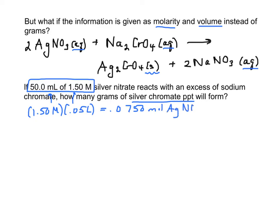Now the rest of the problem is going to look exactly like the last one. We're going to change moles of silver nitrate to moles of silver chromate. So that's 1 mole of silver chromate, 2 moles of silver nitrate. And then we're just going to finish with moles to grams of our silver chromate.